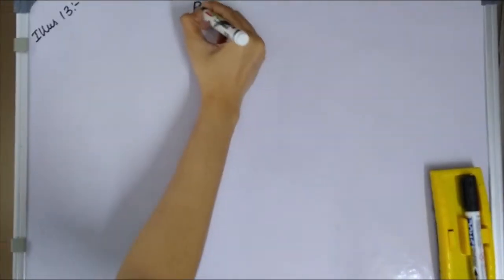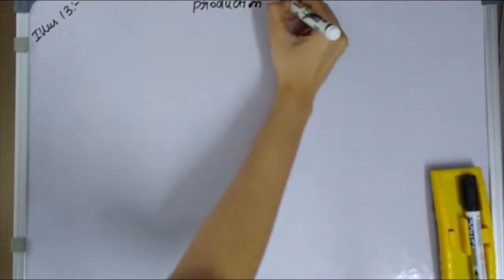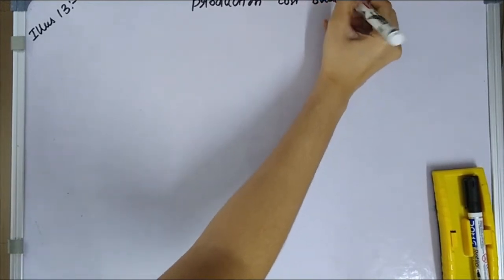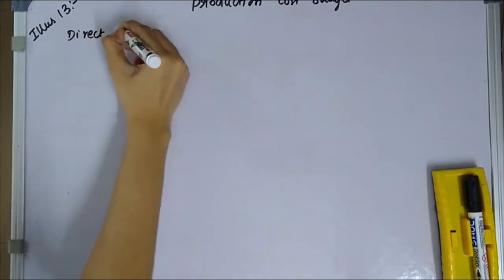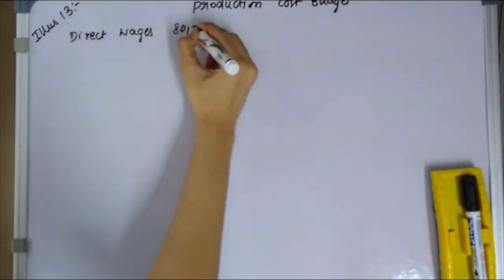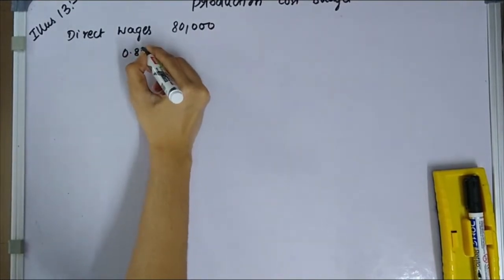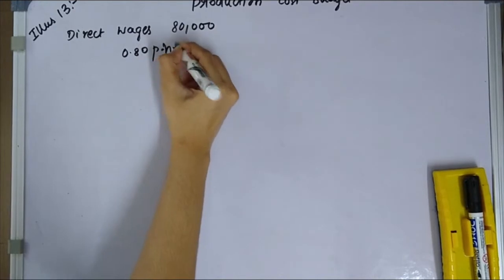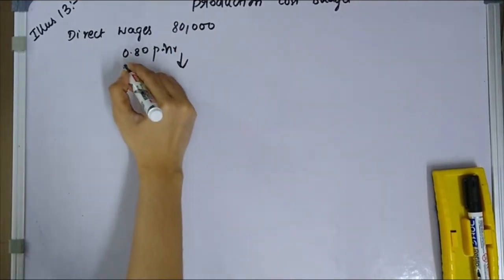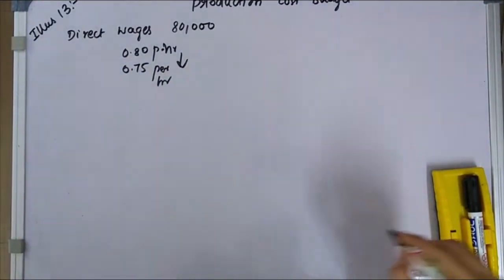For additional information: the average rate of labor remuneration will fall from 0.80 per hour to 0.75 per hour. So for direct wages, the base is 80,000, and the rate changes from 0.80 to 0.75 per hour.